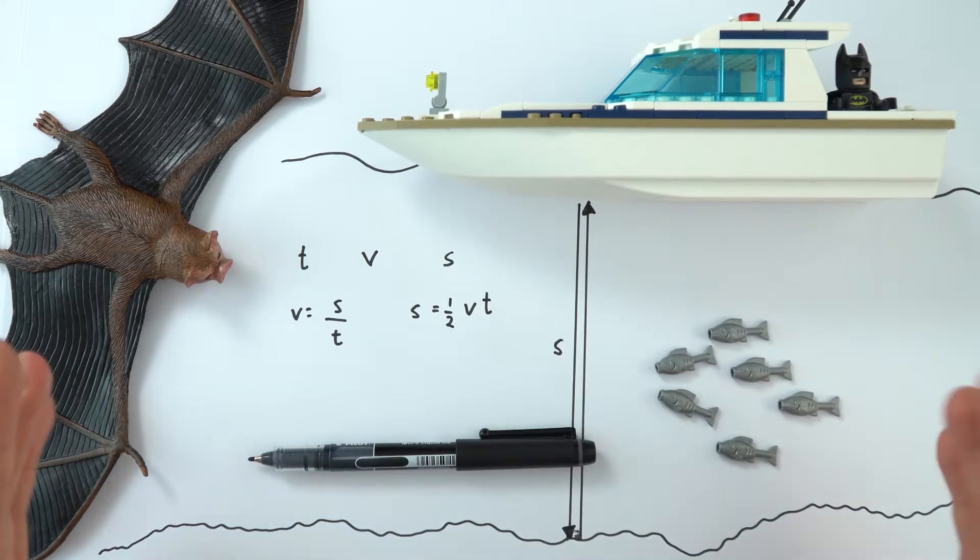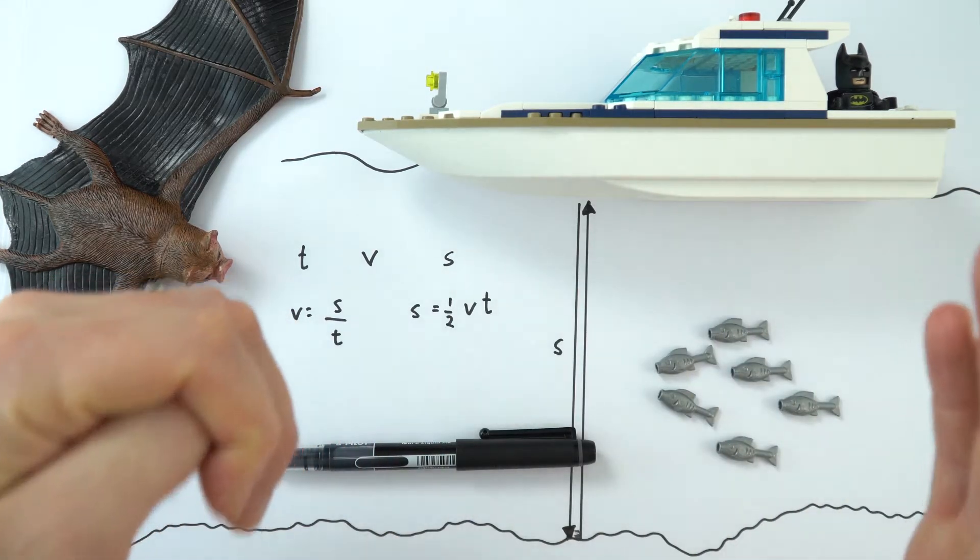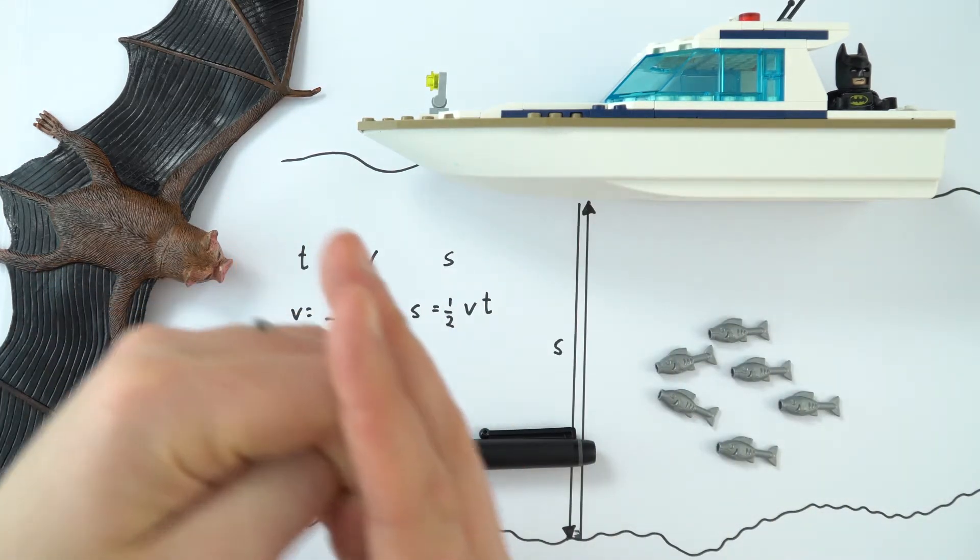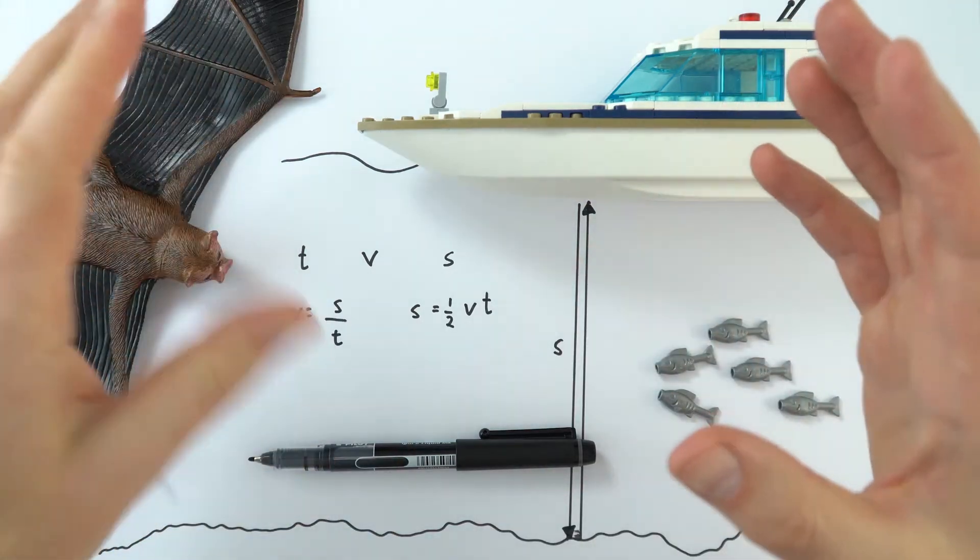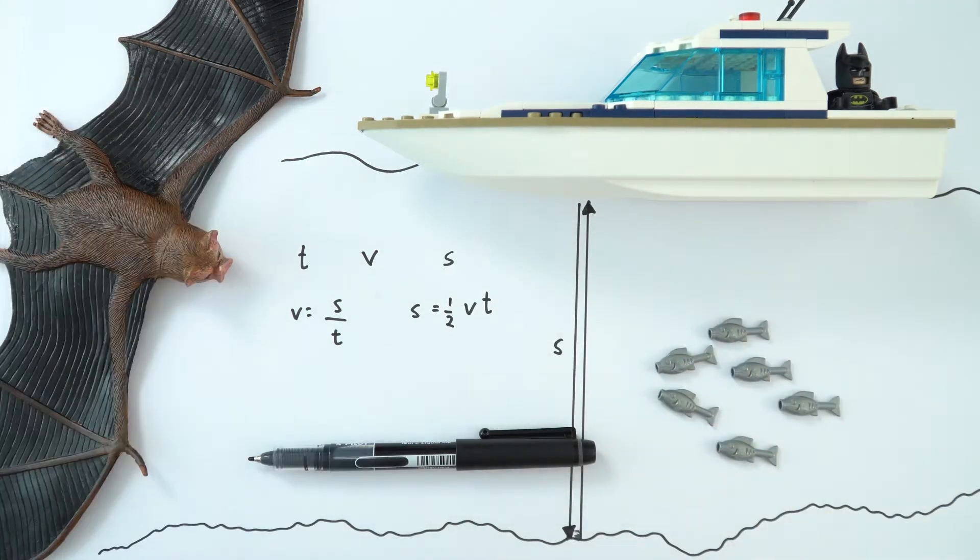But that's basically the principle behind sonar and echolocation. You send a signal, it bounces off something, and then it comes back again. And this is used in all sorts of applications, not just bats and not just the depth of water. But these are just two examples.